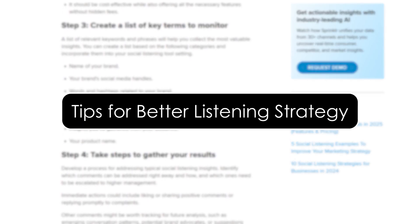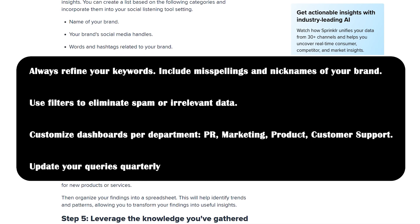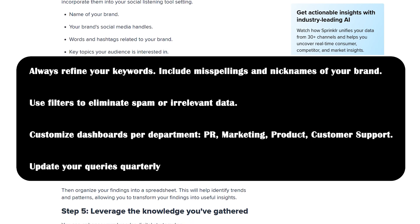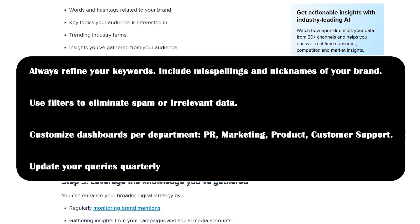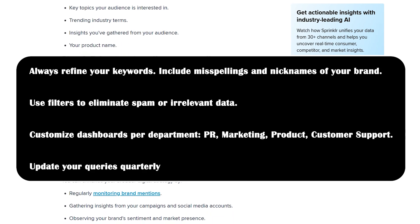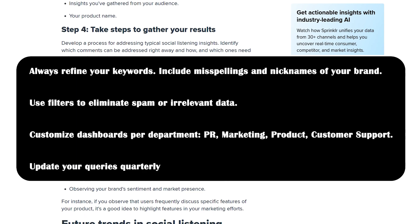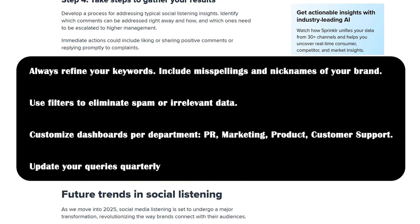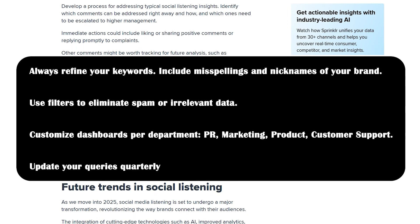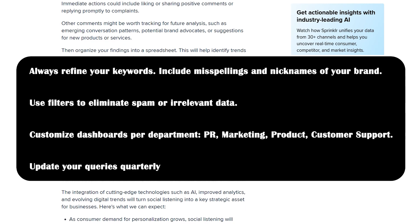Tips for a better listening strategy. Quick tips for getting the most from Sprinklr: always refine your keywords, including misspellings and nicknames of your brand. Use filters to eliminate spam or irrelevant data. Customize dashboards per department — PR, marketing, product, customer support. And update your queries quarterly, because the way people talk changes. The more specific your setup, the more insights you will gain.